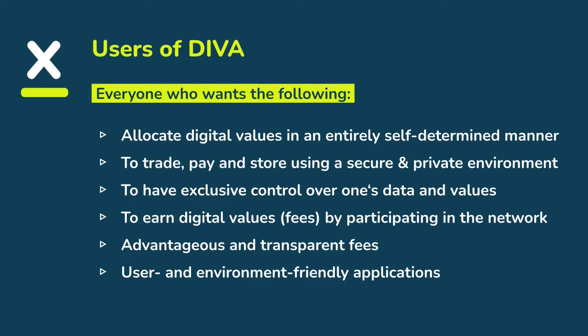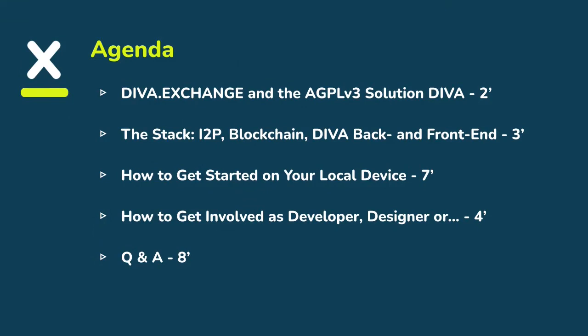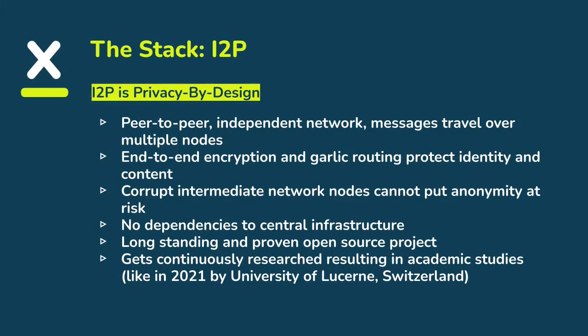We're striving to create user and environment-friendly applications at diva.exchange. The application stack consists of I2P, the blockchain layer which is the distributed storage, the back-end, and the front-end. The network layer is based on I2P — privacy by design. It's a peer-to-peer network where messages travel over multiple nodes, taking different routes inbound to a recipient and outbound back to the sender. It's end-to-end encrypted, and GALIC messaging protects both the identity of the sender and recipient, as well as the message content.